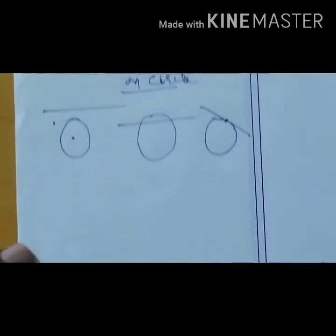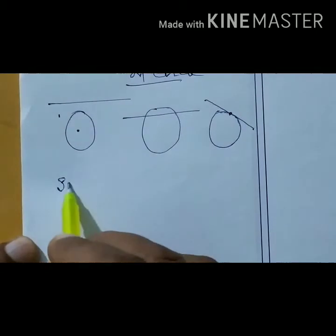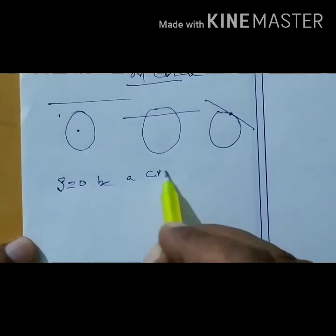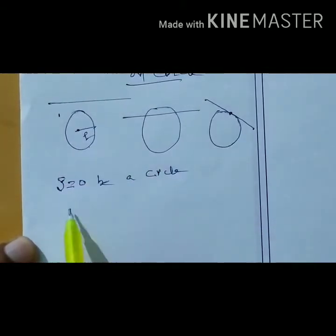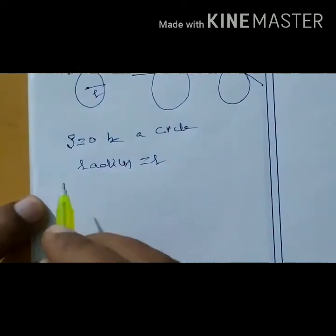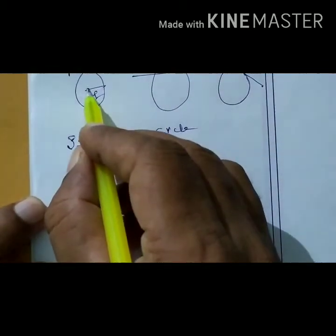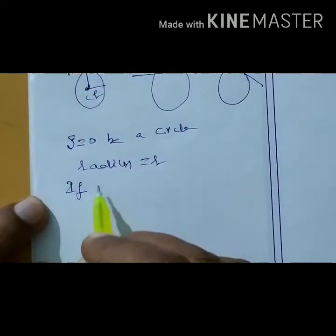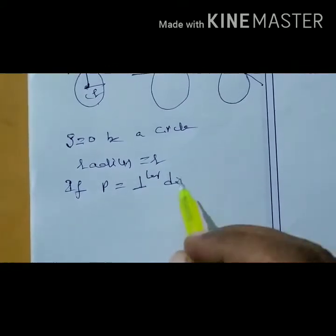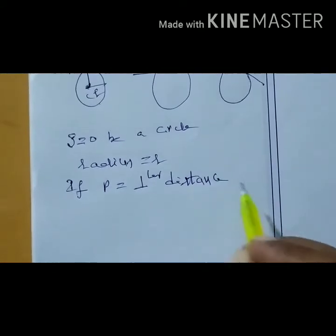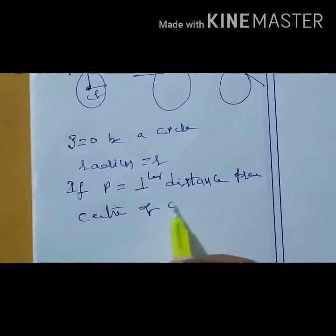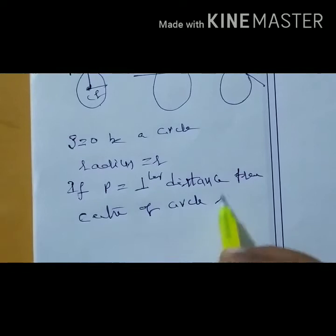Let us assume S = 0 is a circle with radius r. If p is the perpendicular distance from the center of the circle to the line, then based on the value of p relative to r, we can determine the relationship between the line and the circle.